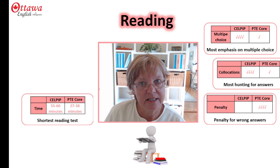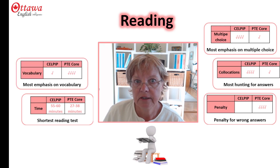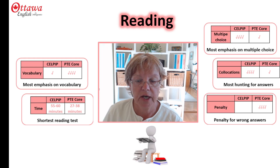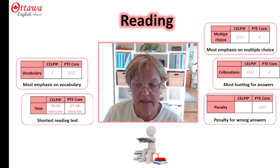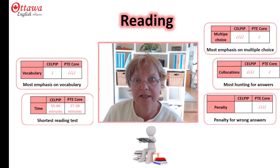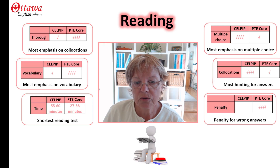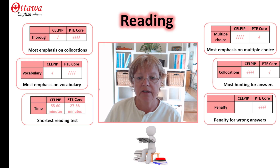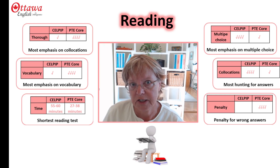PTE Core's reading test is shorter than CELPIP's — it's almost half as long. PTE Core tends to put a lot more emphasis on vocabulary, so in this test you have to pick out the correct word and word form to fill in the blanks. In CELPIP, any difficult vocabulary is usually followed by a sentence that says the same thing in a different way. PTE Core also puts a lot more stress on phrasal verbs, prepositions and collocations, whereas CELPIP's focus is on the meaning conveyed by the text.